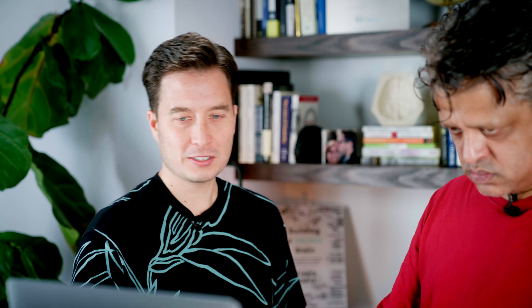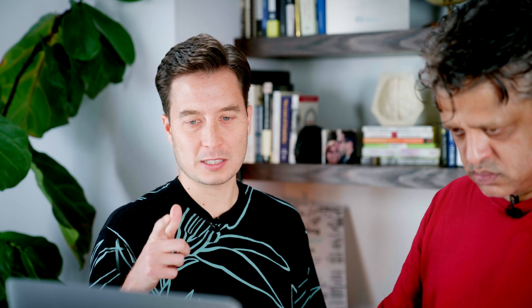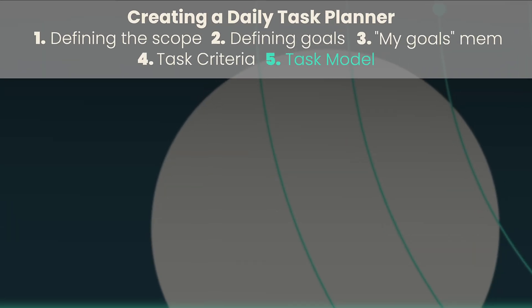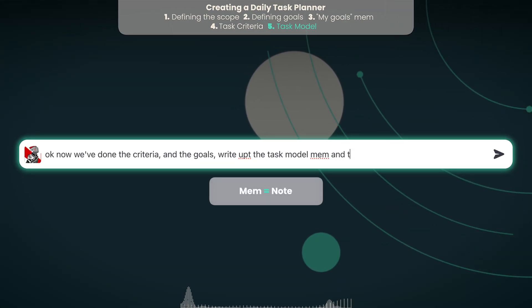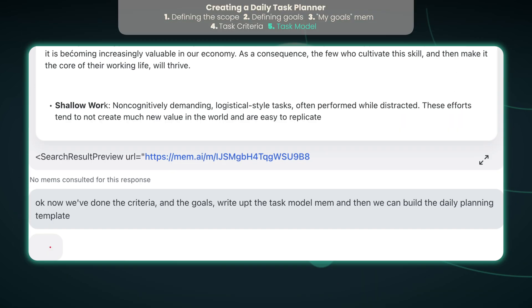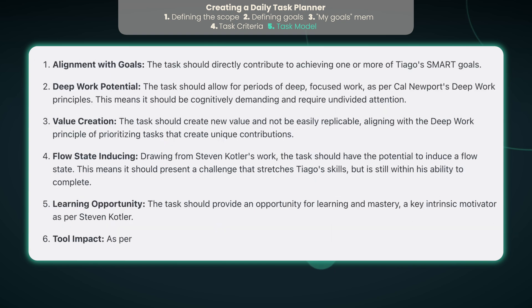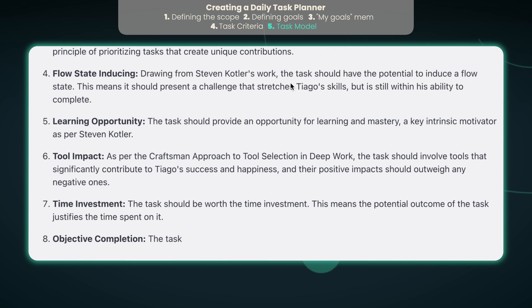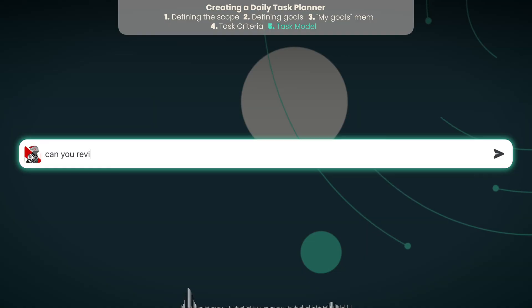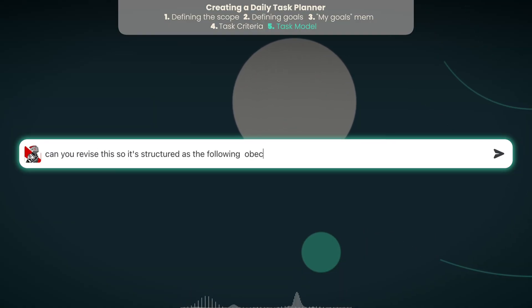These are actually criteria I never really thought about this explicitly, but these are some of the criteria that I have in mind — that's why I built this for myself. Now we've got your task criteria. Now we've done the criteria and the goals. Write up a task model MEM, and then we can build the daily planning template. You can think of it as sort of instructions. So remember what I was telling you in ChatGPT — we have an objective, a process, and an output. Let's apply that: can you revise this so it's structured as objective, process, and output? I love that your instructions don't have to be formal or precise — they just have to be clear.